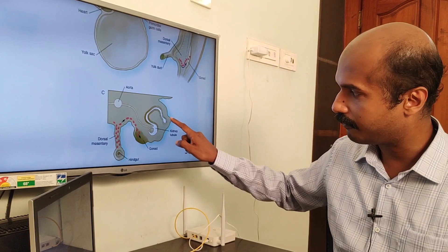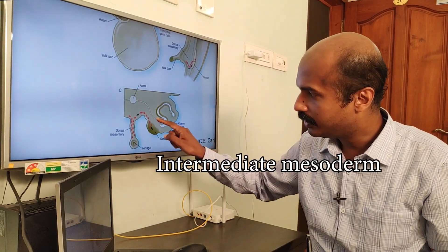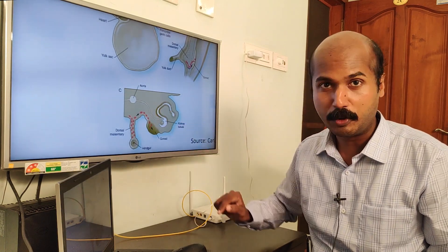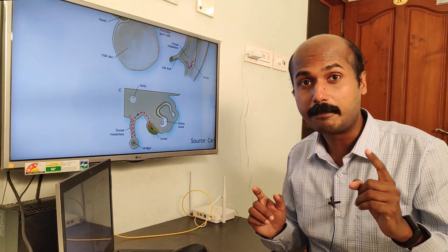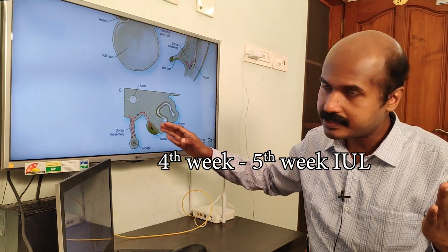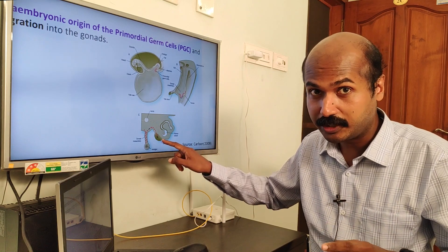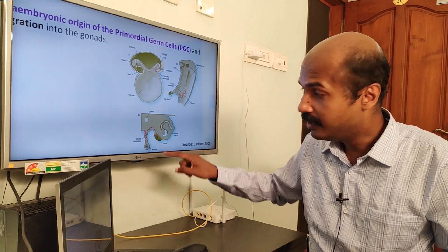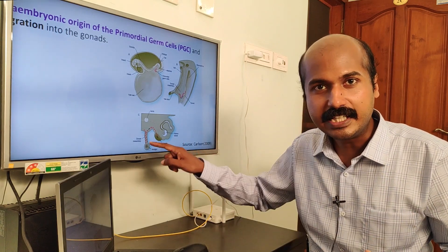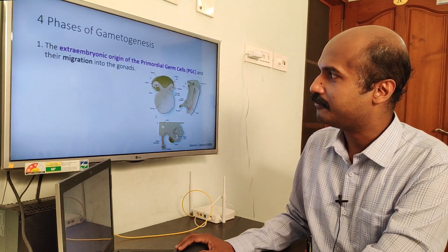The migration proceeds along the dorsal mesentery into the gonad. The gonad and primitive nephric tubules are part of the intermediate mesoderm. This undifferentiated gonad is the destination of PGC migration, which begins at the fourth week and reaches the gonad around mid fifth week of intrauterine life. If this is a genetic male, PGCs develop into spermatogonium; if female, into oogonium.